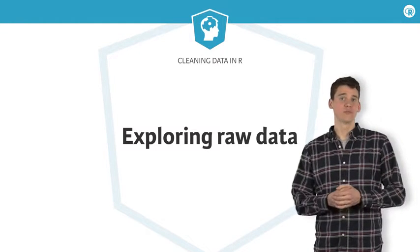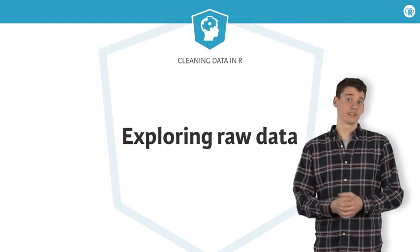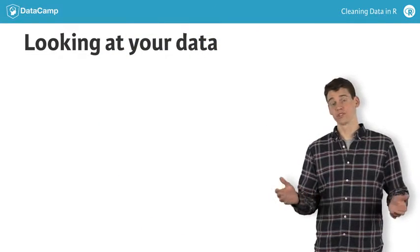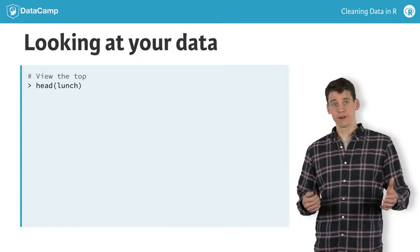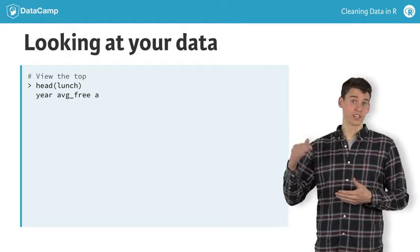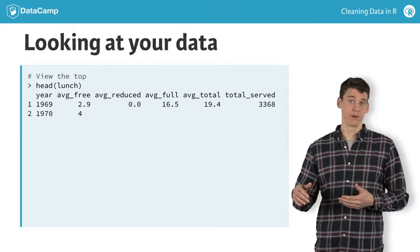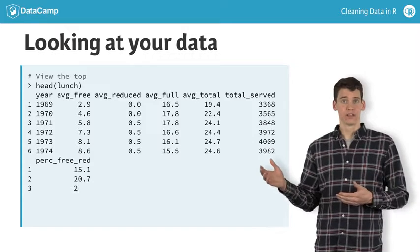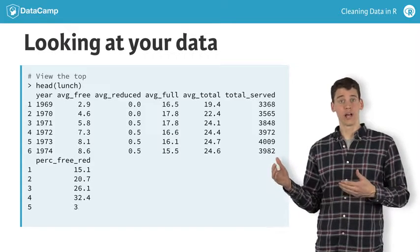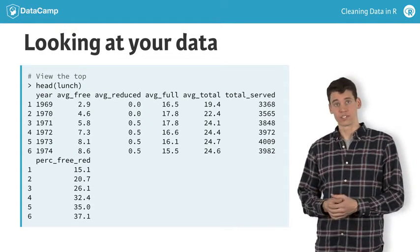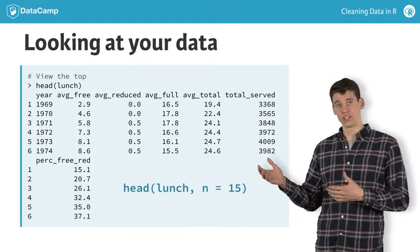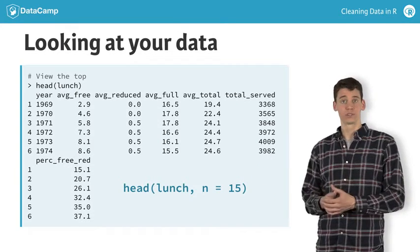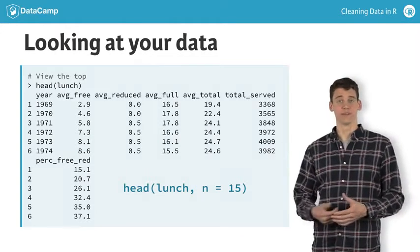We've seen some useful summaries of our data, but there's no substitute for just looking at it. The head function shows us the first six rows by default. If you add one additional argument, n, you can control how many rows to display. For example, head lunch with n equals 15 will display the first 15 rows of the data.